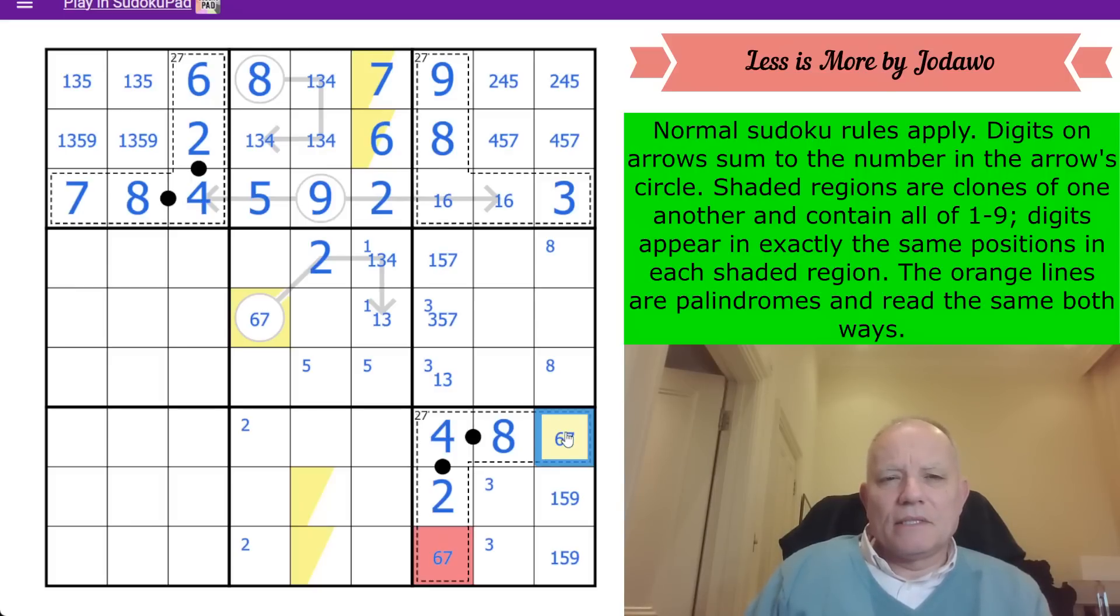It's much simpler. I'm sorry. That 7 sees that cell. I didn't notice that before. I forgot before I remembered the knight's move thing. So the only place for 7 in this box is there. And that now sees yellow. So yellow is 6, which is a bit surprising.